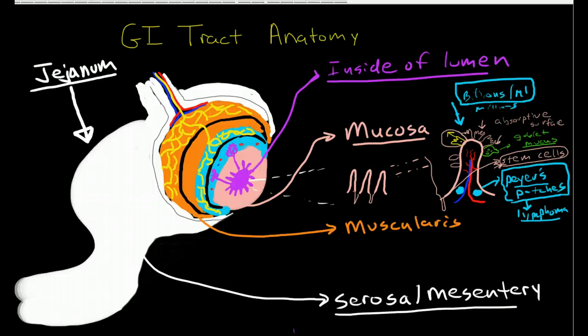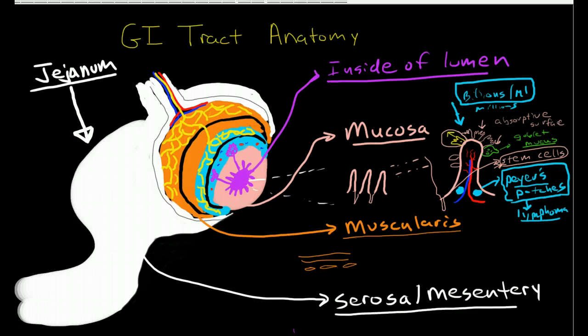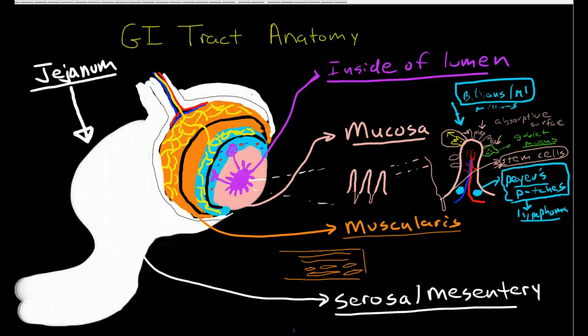So that's the submucosa. And then moving up from the submucosa we have the muscularis, and the muscularis in the small bowel is made up of two layers. We have a longitudinal layer where we have smooth muscle cells that have a longitudinal orientation that go along the length of the tube, and then we have an inner layer which is circular. So the muscle fibers here run around the lumen.